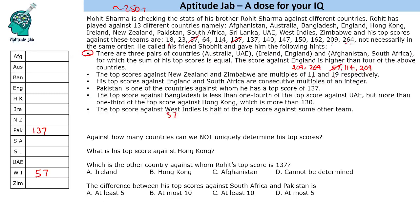So we found the first two pairs: 23 & 264, and 137 & 150. We then find the third pair: 140 and 147, which also sum to 287. So the three equal-sum pairs are (23, 264), (137, 150), and (140, 147).